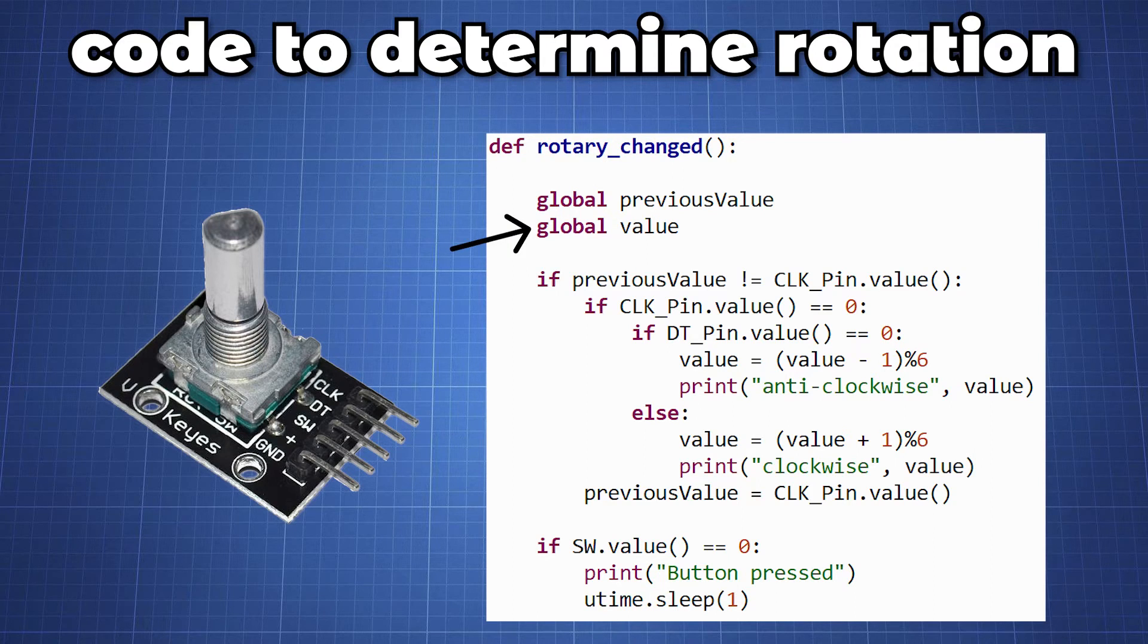Using this information we can write code to determine the rotating direction. We can create a variable to either increase or decrease the variable by set value depending on the direction we turn the knob.